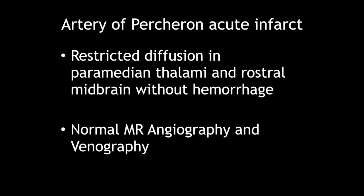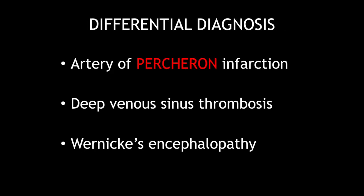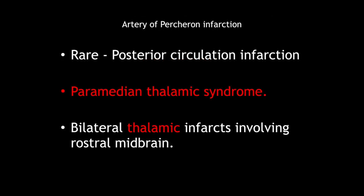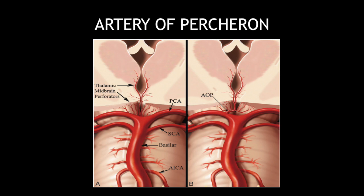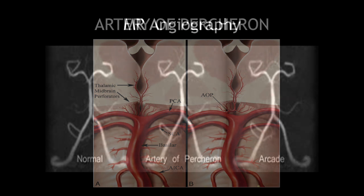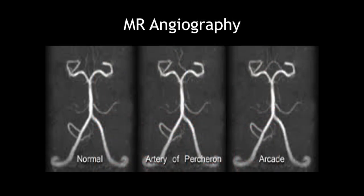The differential diagnosis for restricted diffusion in bilateral thalami includes artery of Percheron infarction, deep venous sinus thrombosis, or Wernicke's encephalopathy. This is also called paramedian thalamic syndrome and is a rare type of posterior circulation infarction. It occurs due to a solitary arterial trunk supplying bilaterally. This artery is very difficult to identify on MR angiography, but some images can demonstrate a single trunk supplying both sides.